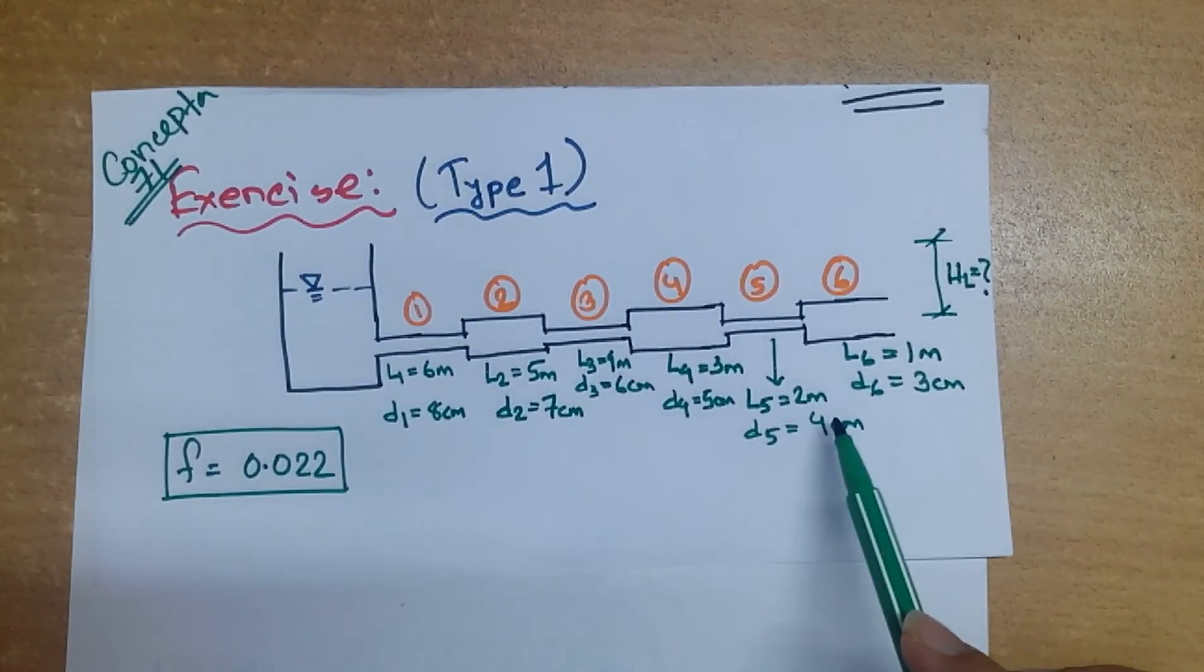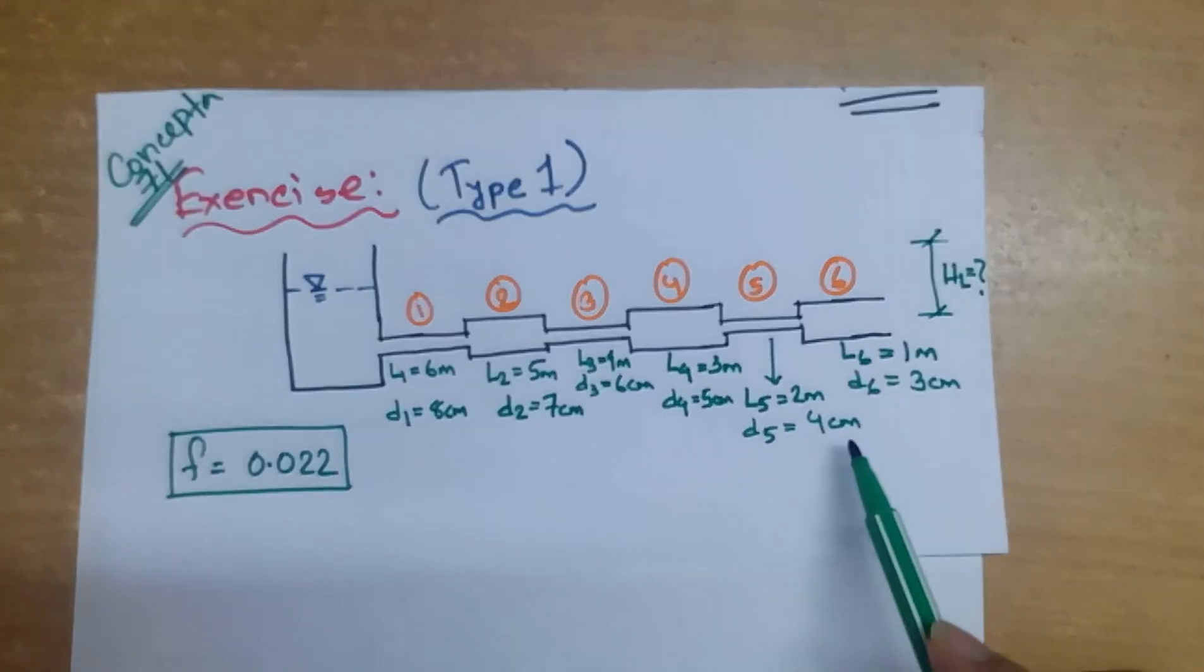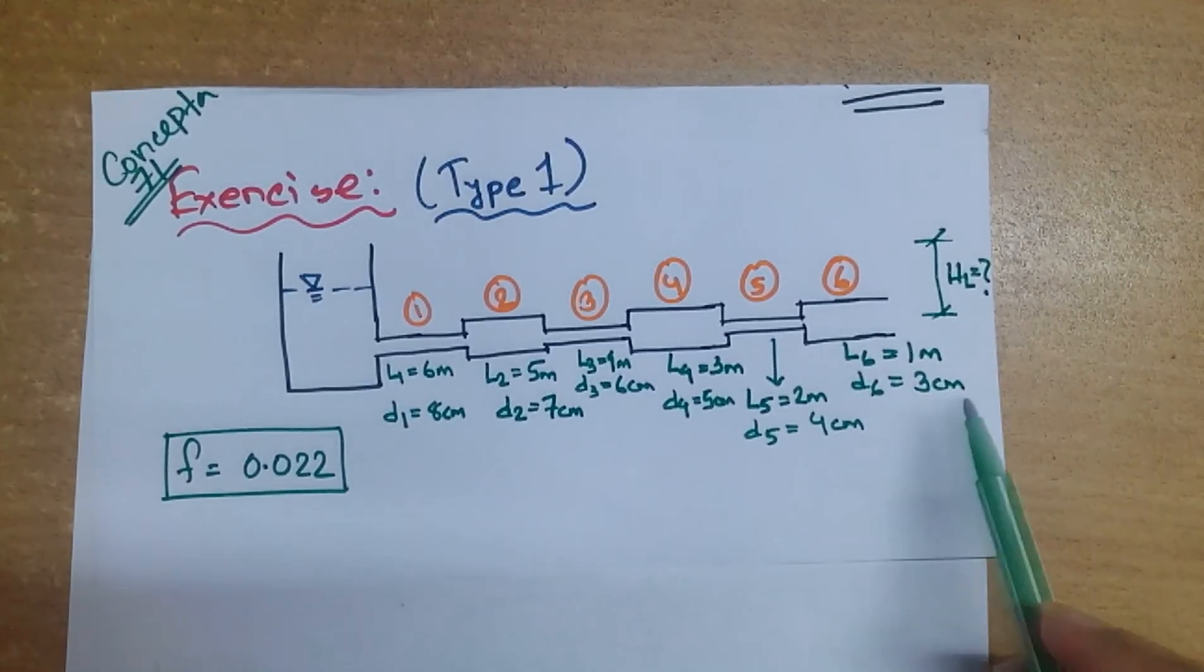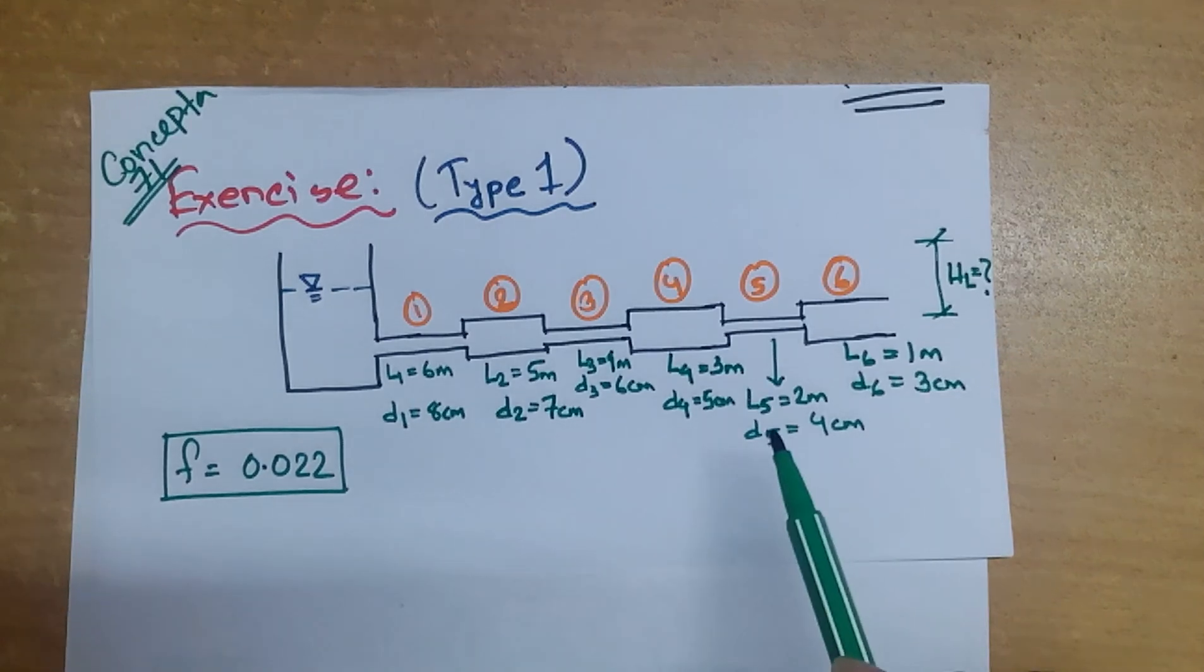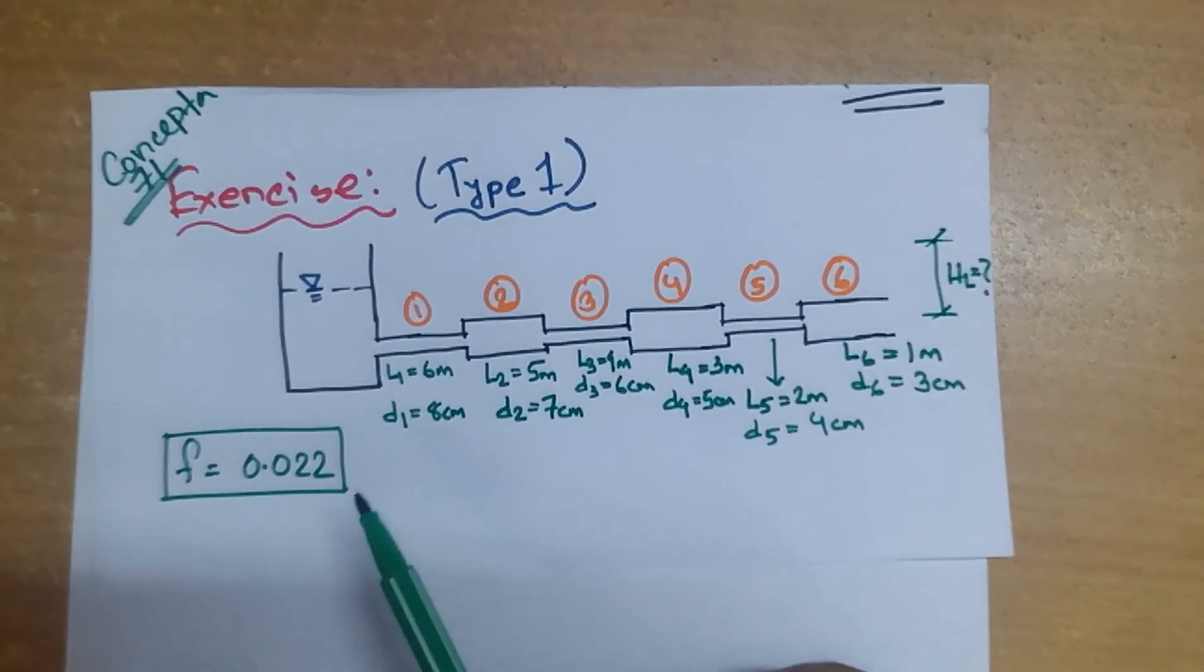Fifth pipe is 2 m with diameter 4 cm. Sixth pipe is 1 m with diameter 3 cm. The friction factor f is 0.022.